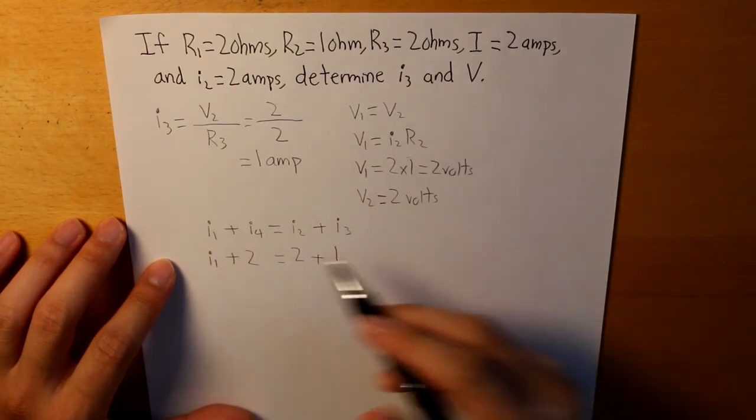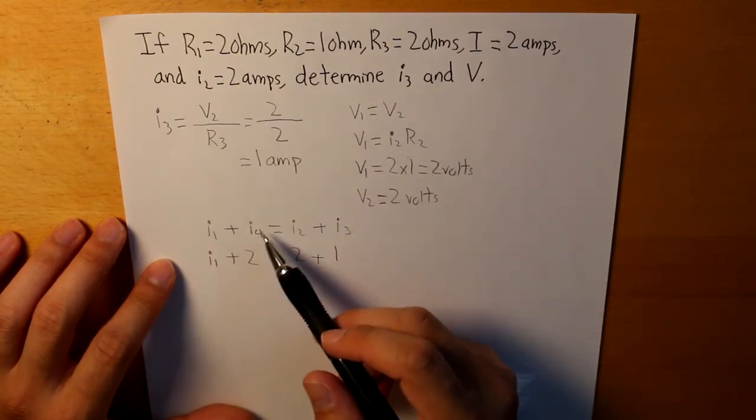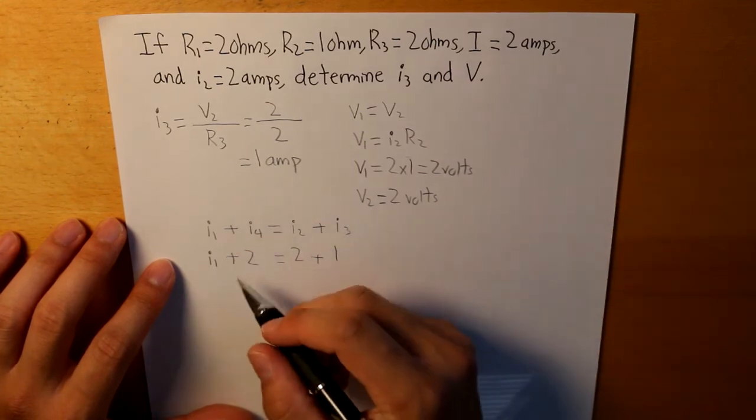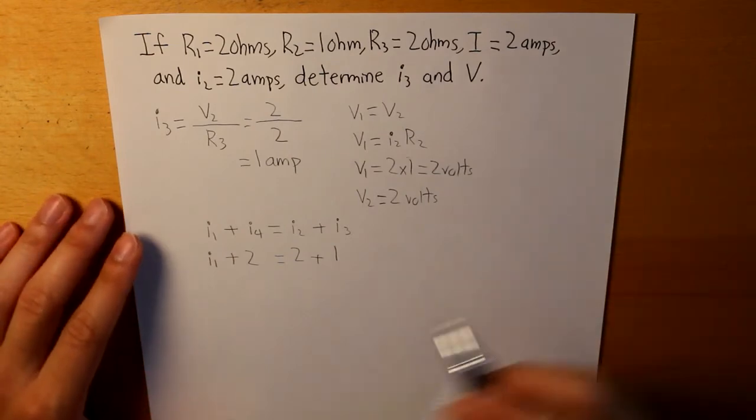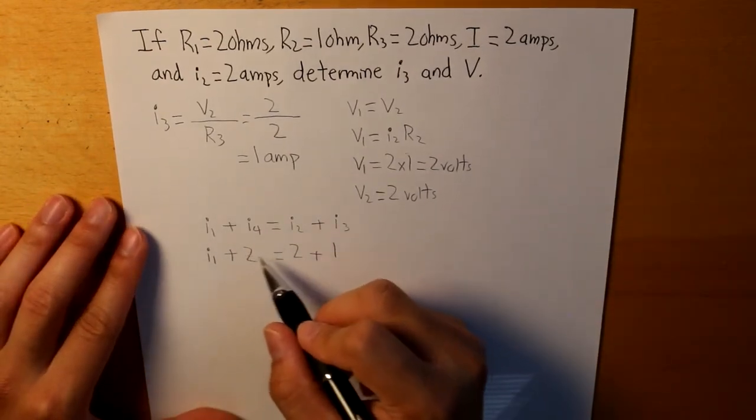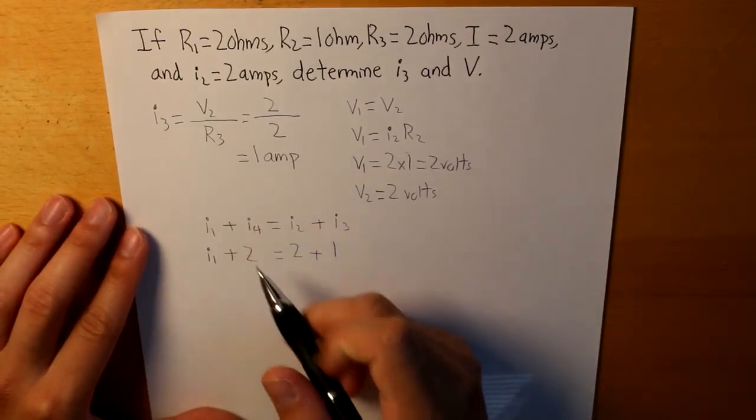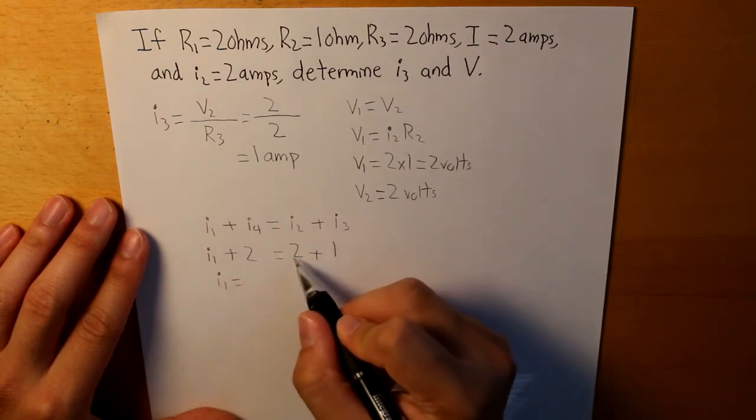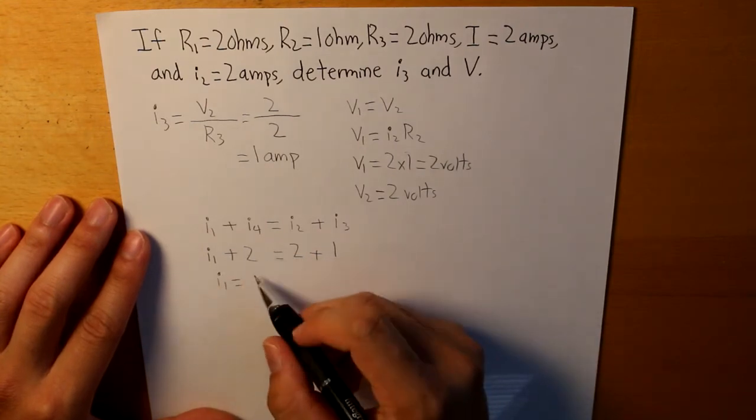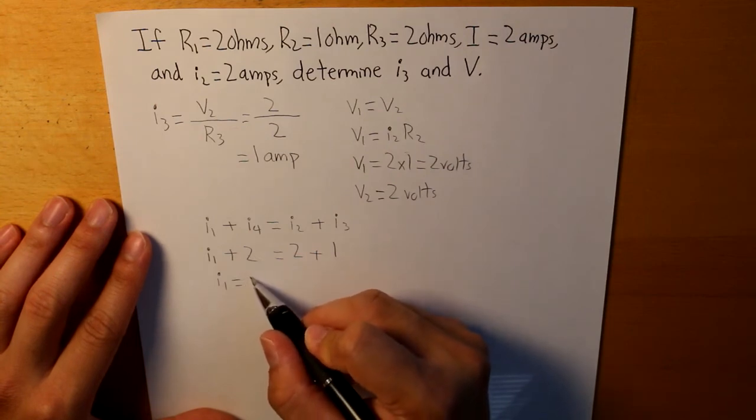We do not know what I1 is, but we can isolate I4 to the right side to determine what I1 is. And later on, I'm going to show you why I'm solving for I1. So if we put I4 onto the right side, so that is 2 plus 1 minus 2, we get 1 amp.